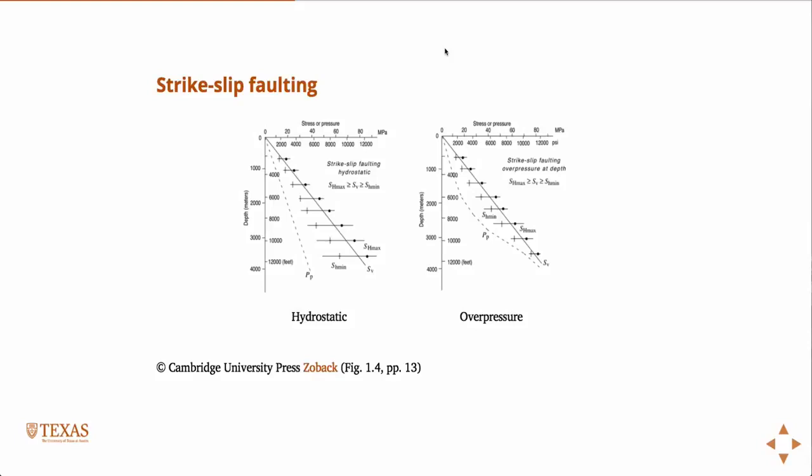Okay, so strike-slip faulting, it's just the same idea, right? We're going to draw a picture with the pore pressure. In strike-slip, the vertical stress is between the two horizontal stresses. And we have a pore pressure there, which sets the minimum. And as we go into an overpressure regime, then everything gets squeezed down. And while, you know, the SH max can be, well, by definition, is larger in a strike-slip faulting regime, you know, the pore pressure will never exceed the vertical stress. So everything gets squeezed down.